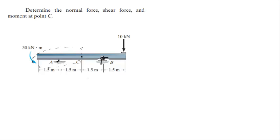So the first thing we're going to do is find AY. To find AY, let's say that the sum of the moments at B is equal to zero.